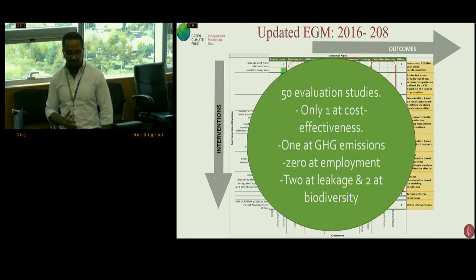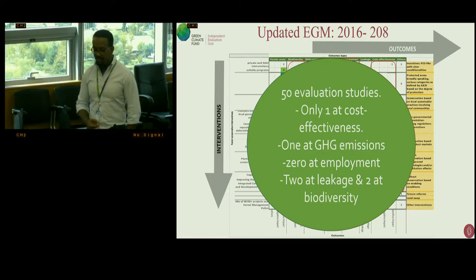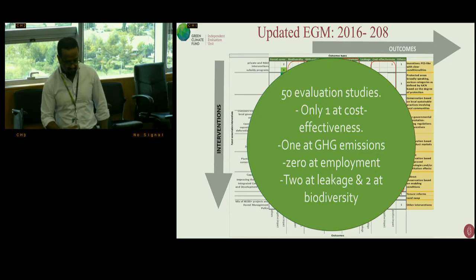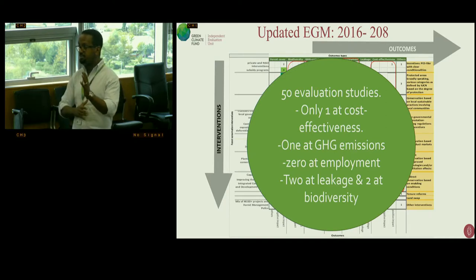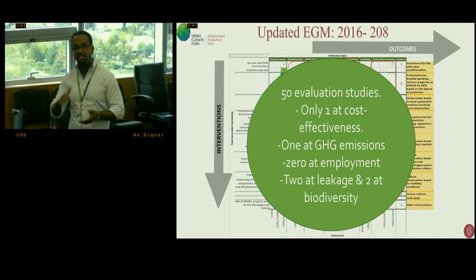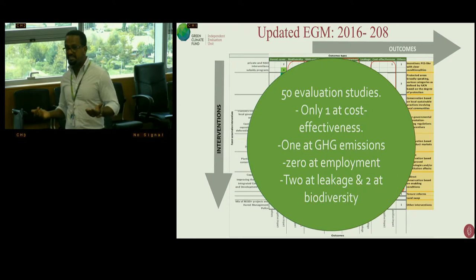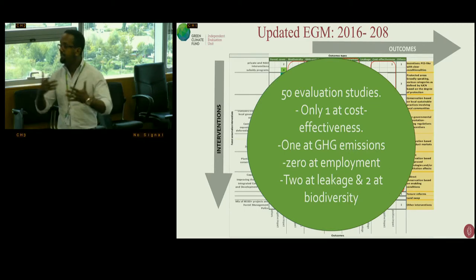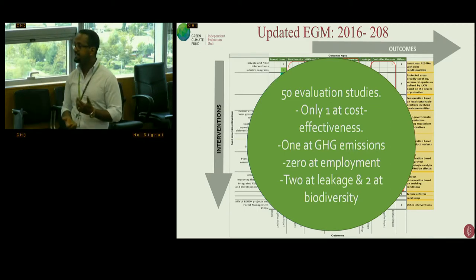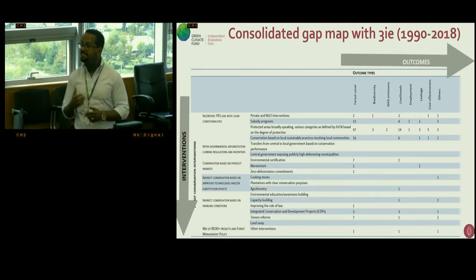The evidence gap map plots the outcome on the x-axis and the intervention on the vertical axis. When you look at this kind of table, you first look at the empty sets — you observe a lot of empty black space, indicating no studies for most interventions across different outcome variables. Out of the 50 evaluations we looked at, there's only one on cost effectiveness, one on greenhouse gas emissions, zero on employment, and two looking at leakage. This covers 2016 to 2018. But then you might ask: that's only two and a half years. So we merged our data with the 3IE evidence gap map to create a consolidated gap map from 1990 to 2018.